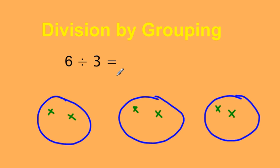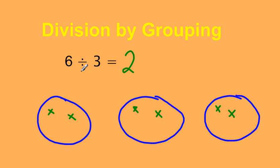Now the question is asking us how many are in each group. Well, I see there's 2 in this group, 2 in this group, and 2 in this group. So 6 divided by 3 equals 2.